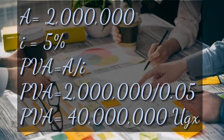When we divide, we get the present value of perpetual annuity as 40 million UGX. So the present value of John's investment is 40 million — he will have to invest 40 million right now in order to receive 2 million annually at an interest rate of 5%.